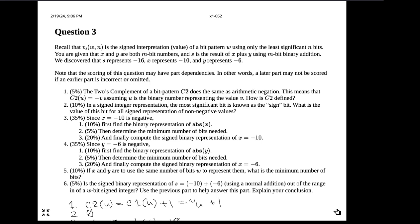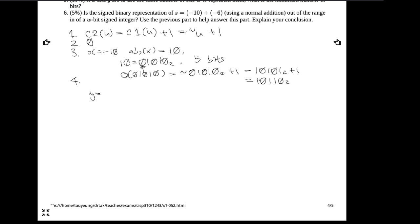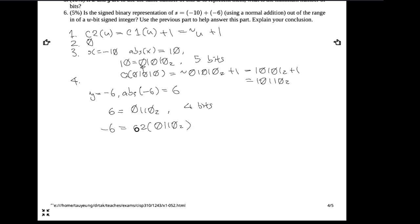For part four, y is negative 6. The absolute value of negative 6 is 6. Six is represented as 110 base 2, but with the sign bit we need four bits. So negative 6 is the C2 of 0110 base 2: the bitwise NOT of 0110 plus 1 gives 1001 base 2 plus 1, which is 1010 base 2.